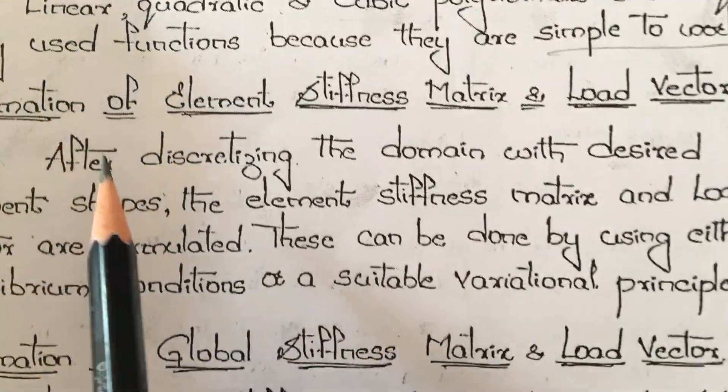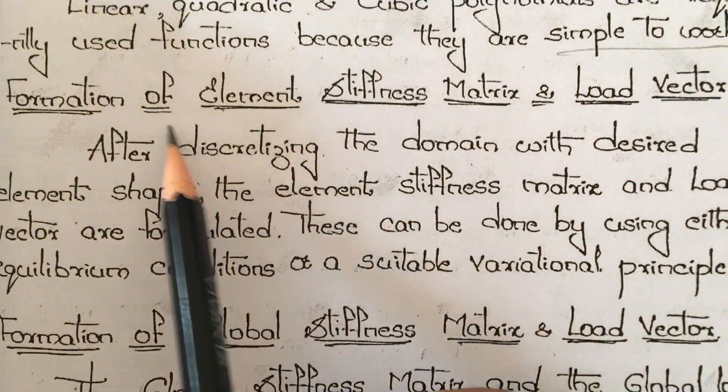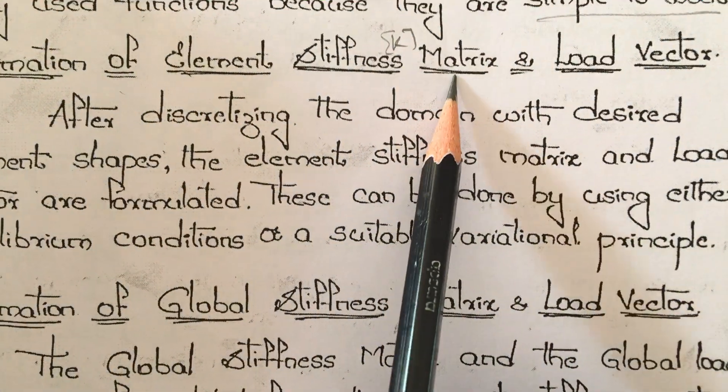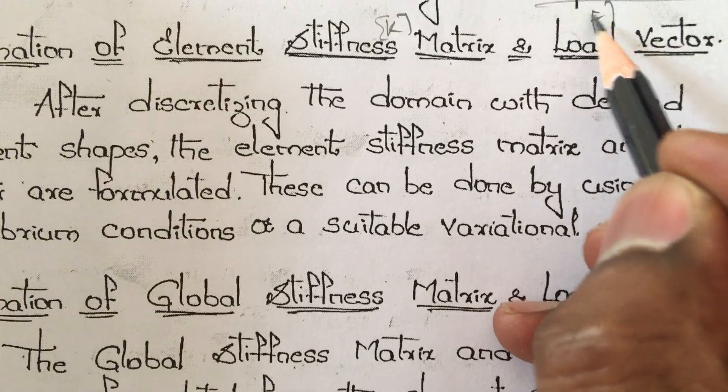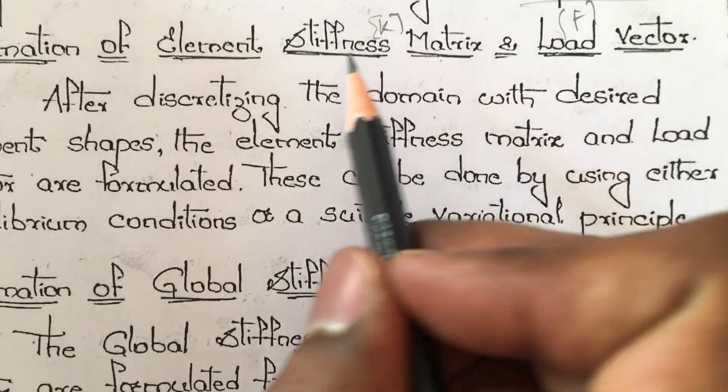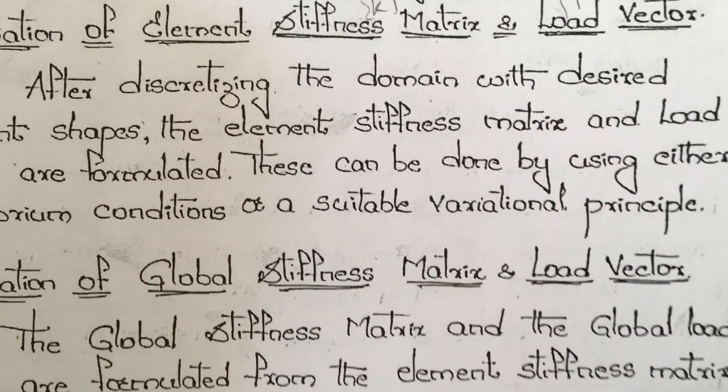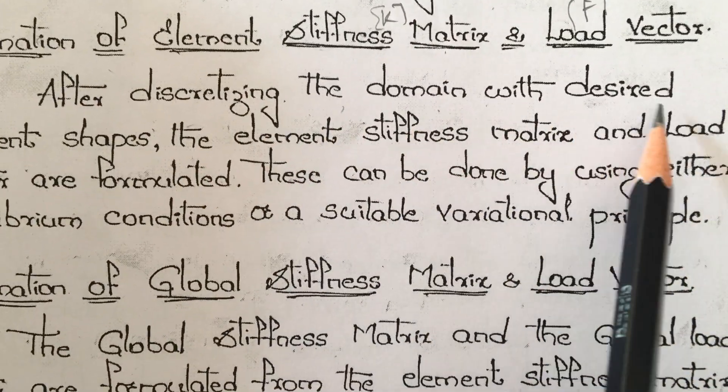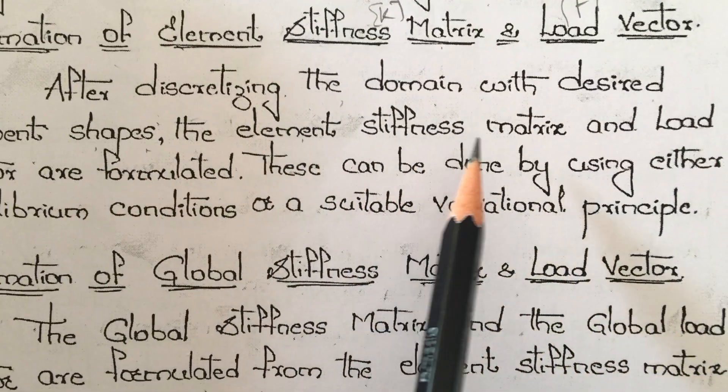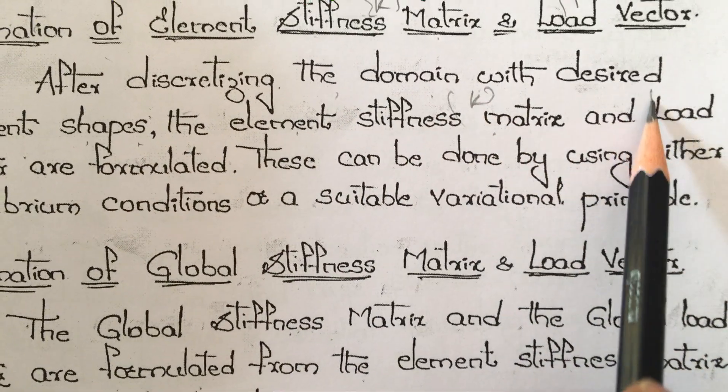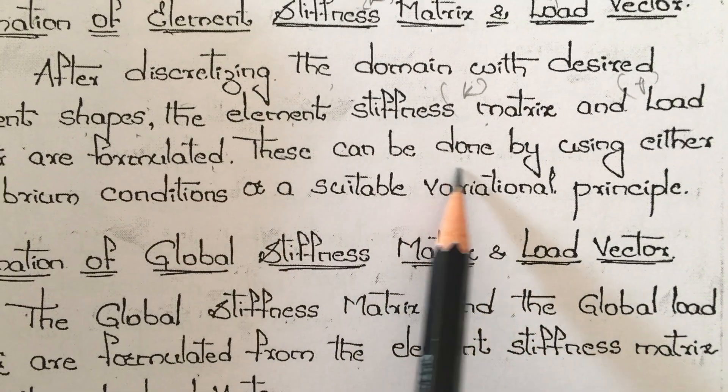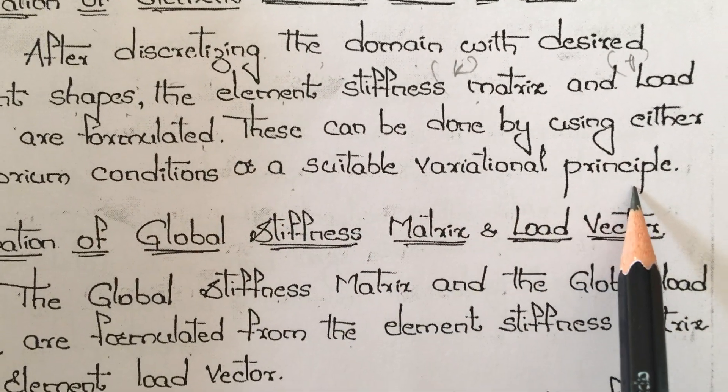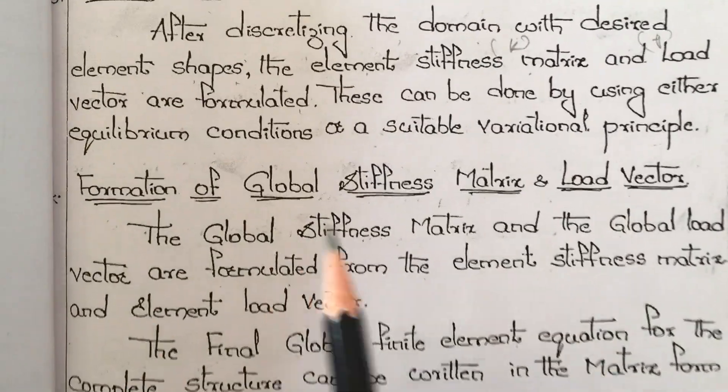Later, after the displacements, we do formation of elemental stiffness matrix. After discretizing the domain with desired element shape, the elemental stiffness matrix and load vector are formulated. This can be done using either equilibrium conditions or suitable variational principles.